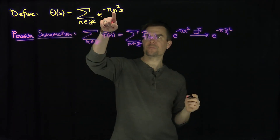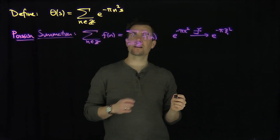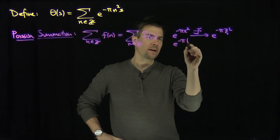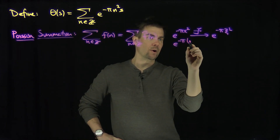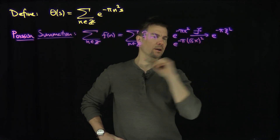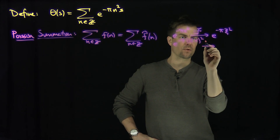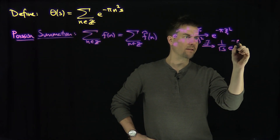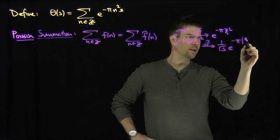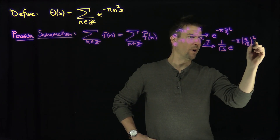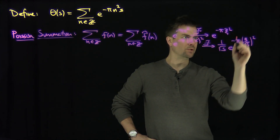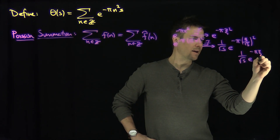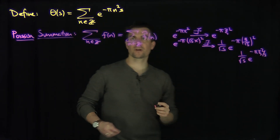In particular, if I think of my f of x as e to the negative pi s x squared — so if I have a square root of s times x squared — then by the scaling laws for the Fourier transform, this will Fourier transform to 1 over the square root of s, times e to the negative pi xi squared over s. So this is exactly equal to 1 over sqrt(s) times e to the negative pi xi squared over s.